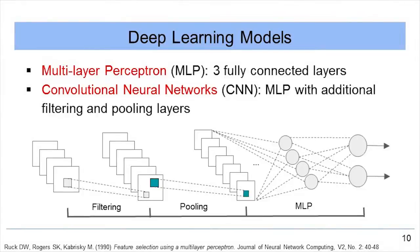The first deep learning model, the multi-layer perceptron, consists of three fully connected perceptron layers with an input, a hidden, and an output layer. The convolutional neural network contains the multi-layer perceptron but also includes additional filtering and pooling layers that isolate the most significant features and reduce variation under translation.